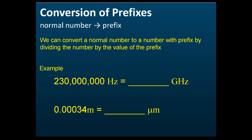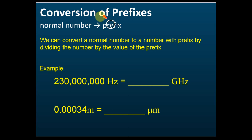To convert a normal number to a prefix, we divide the number by the value of the prefix. For prefix to normal number, that is the inverse — we multiply by the value of the prefix. So prefix to normal number, we divide.